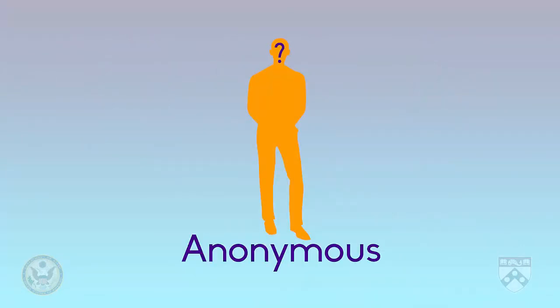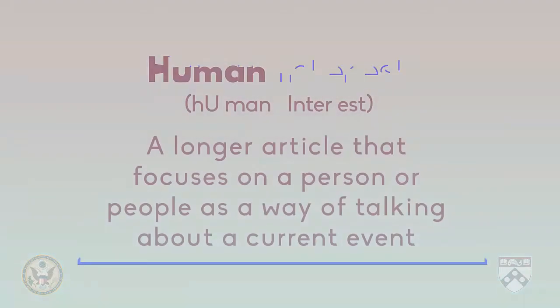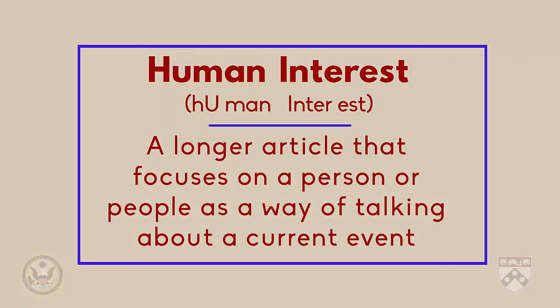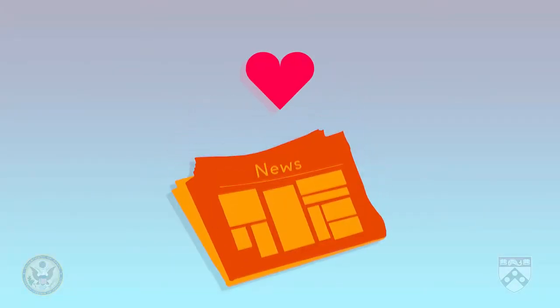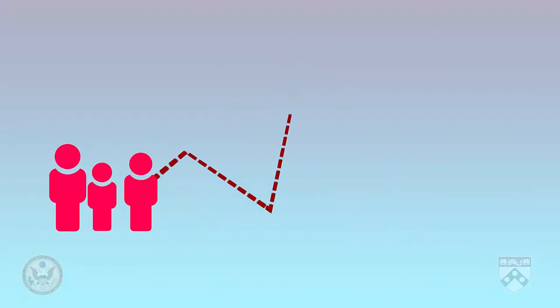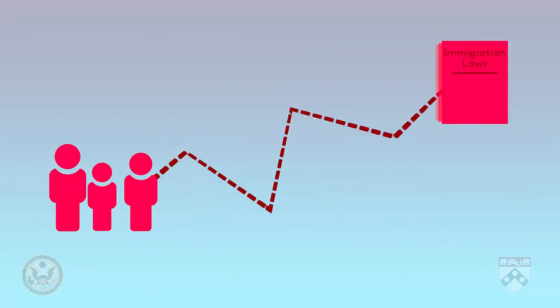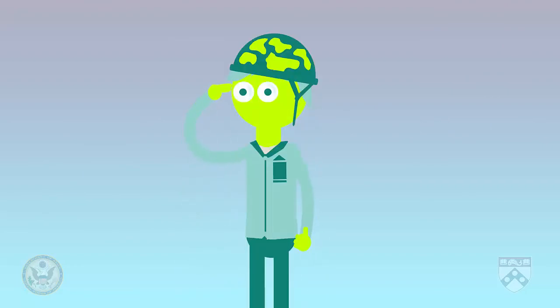Often sources in investigative journalism choose to be anonymous. Lastly, the final type of article is human interest journalism. Human interest stories focus on a person or people as a way of talking about a current event. This type of story brings an emotional side to a larger issue. It could give a voice to the voiceless, related to the journalistic principle of empowerment. For example, a human interest story may follow one immigrant family and talk about their journey as a way of talking about immigration laws. Or, a human interest story could focus on one soldier as a way of talking about war.